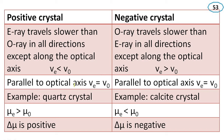In both positive and negative crystals, parallel to the optical axis, the velocity VE equals VO. An example of a positive crystal is quartz. Calcite crystal is an example of a negative crystal. In a positive crystal, the refractive index mu-E is greater than mu-O. In a negative crystal, mu-E is less than mu-O. Therefore, delta mu is positive for a positive crystal and delta mu is negative for a negative crystal.